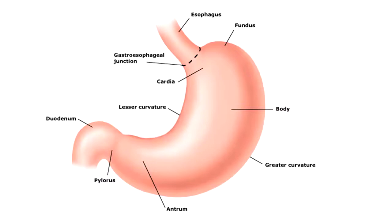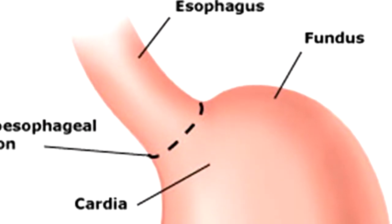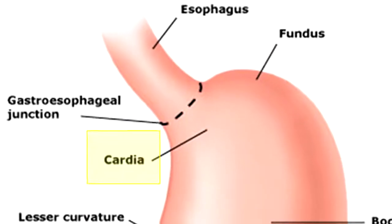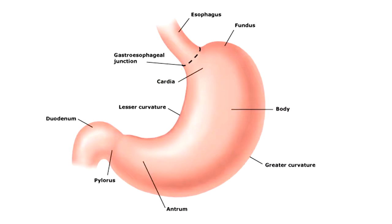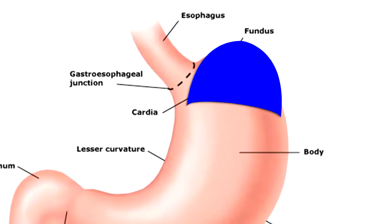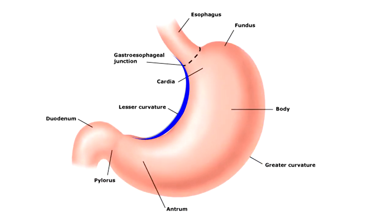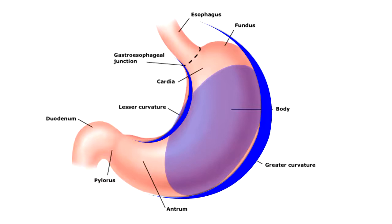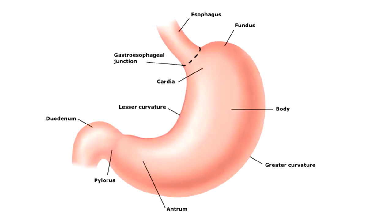Coming to the different parts of the stomach: the esophagus joins the stomach at the gastroesophageal junction. At that point is the cardia, the uppermost part of the stomach, which is a continuation of the lower esophageal sphincter. Then we have the fundus. You should also be able to identify the greater curvature and the lesser curvature. Between the curvatures lies the body of the stomach and the antrum, followed by the pylorus where the pyloric sphincter is located.